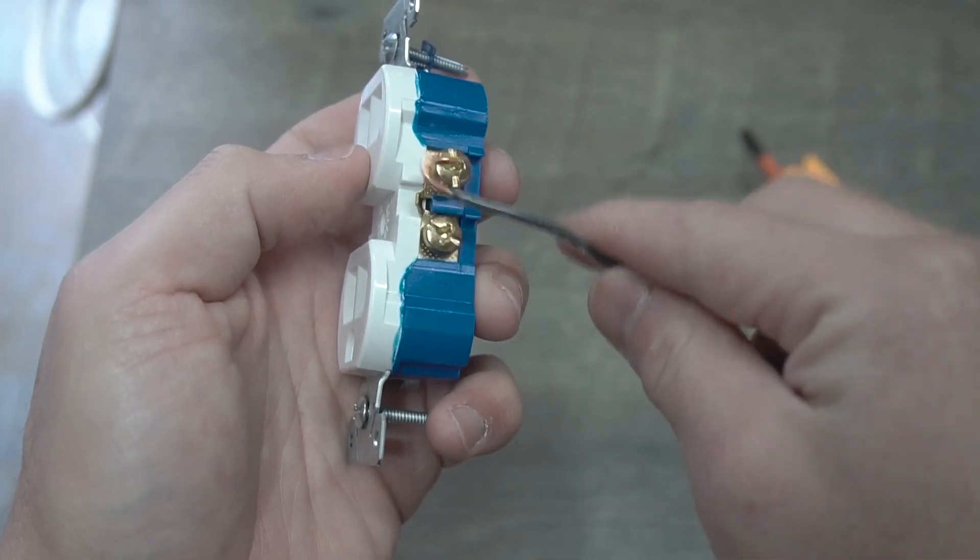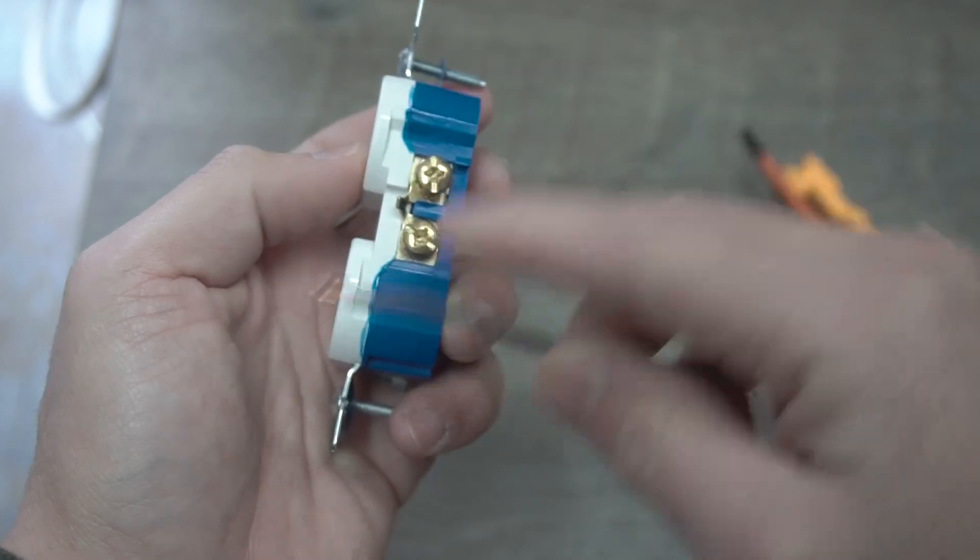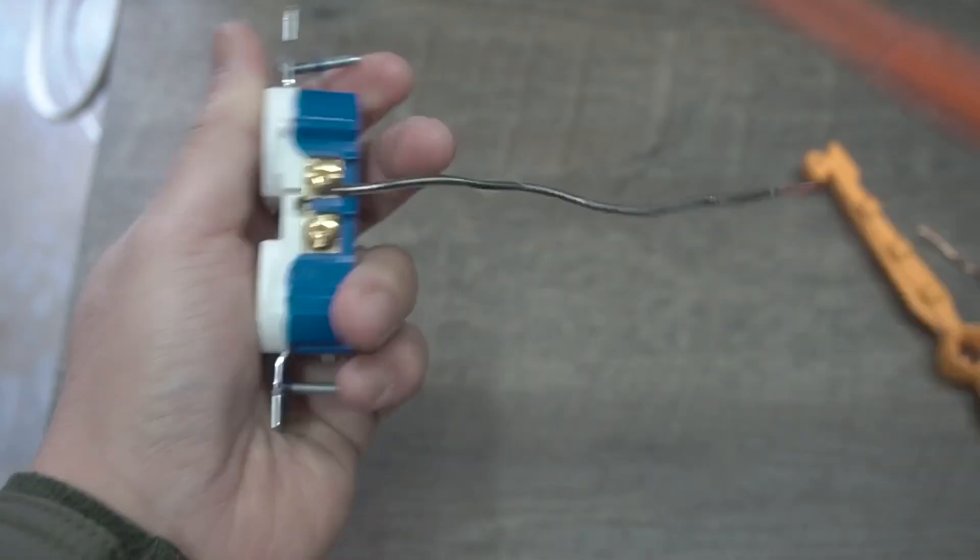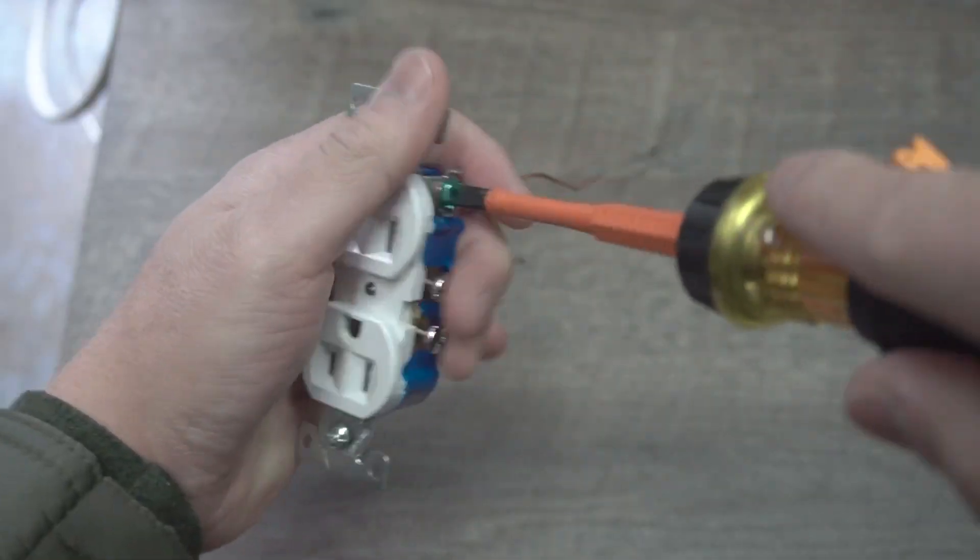Put a pigtail onto the brass terminal. You're going to put it in a clockwise position. Tighten that real well. Pigtail on the ground, clockwise, tighten that down real well.